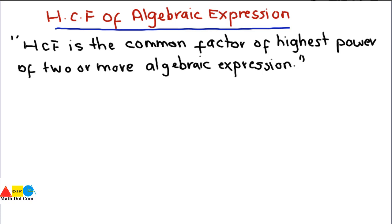There are two important things in finding the HCF of an algebraic expression. One is the common factor — you have to first find the common factors of all the algebraic expressions. And then out of those common factors, you have to pick the factor that has the highest power. You need not include all common factors, only the one with the highest power.